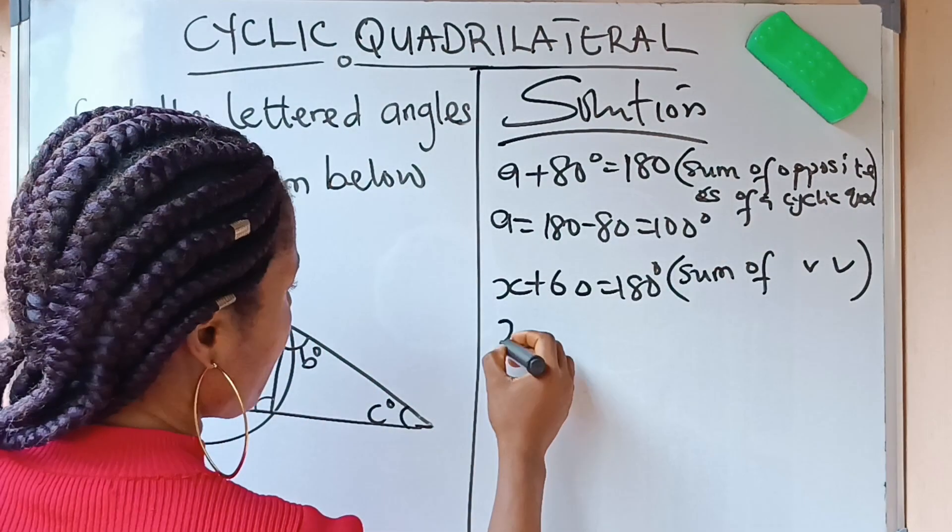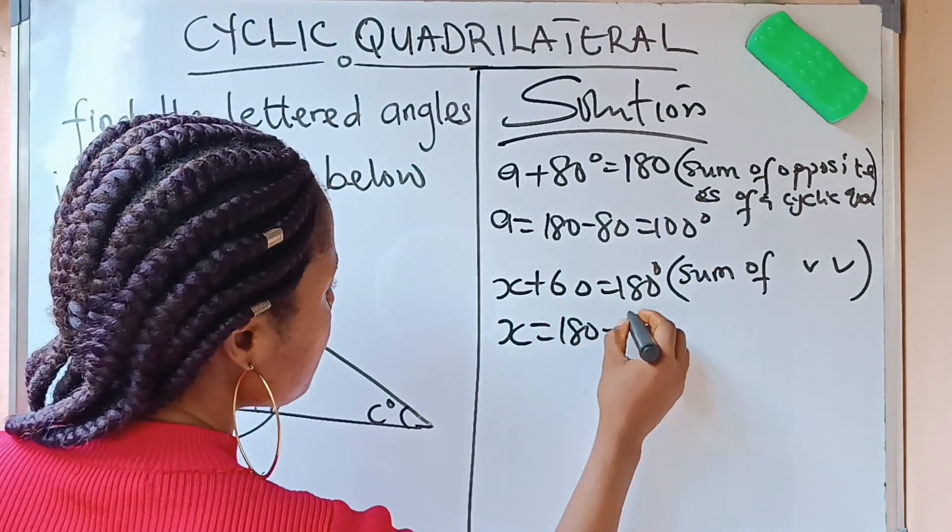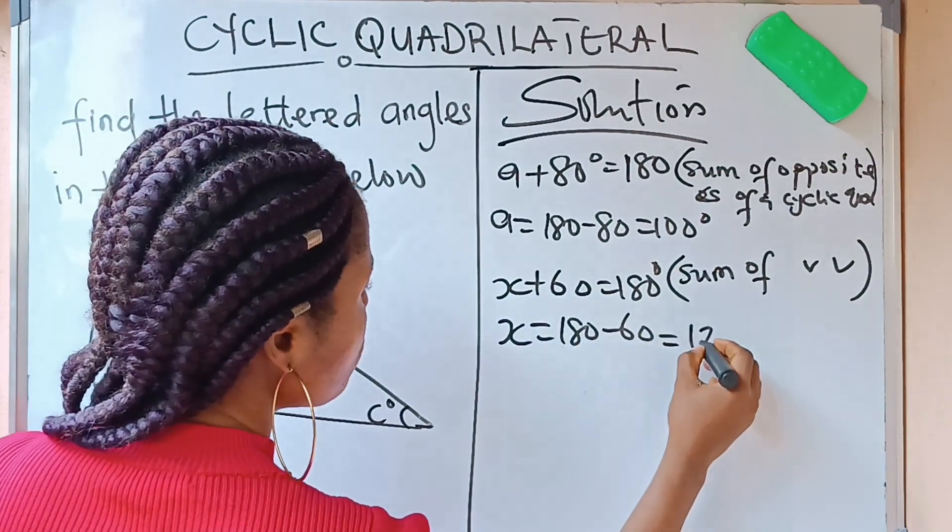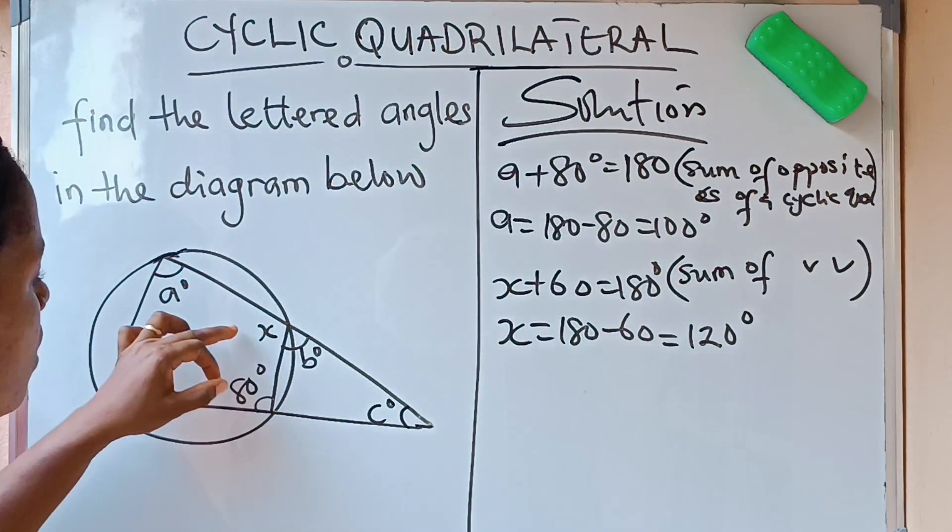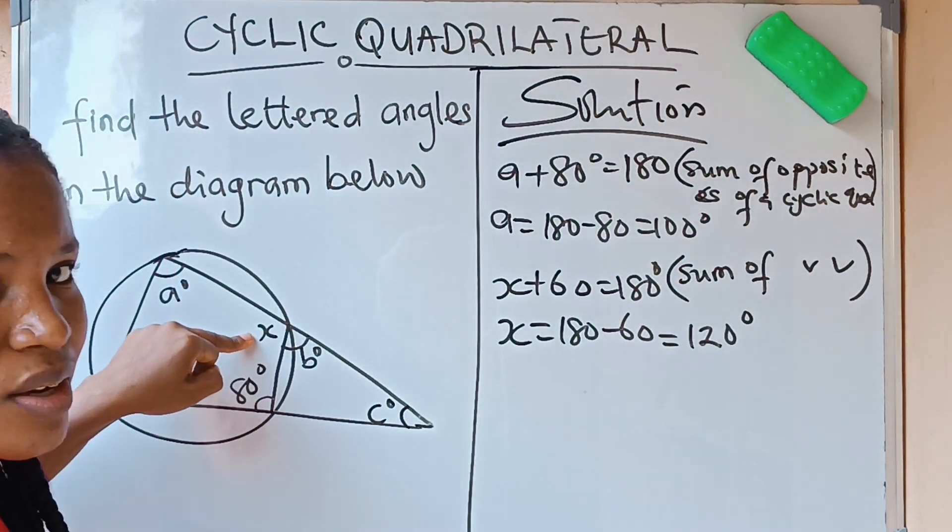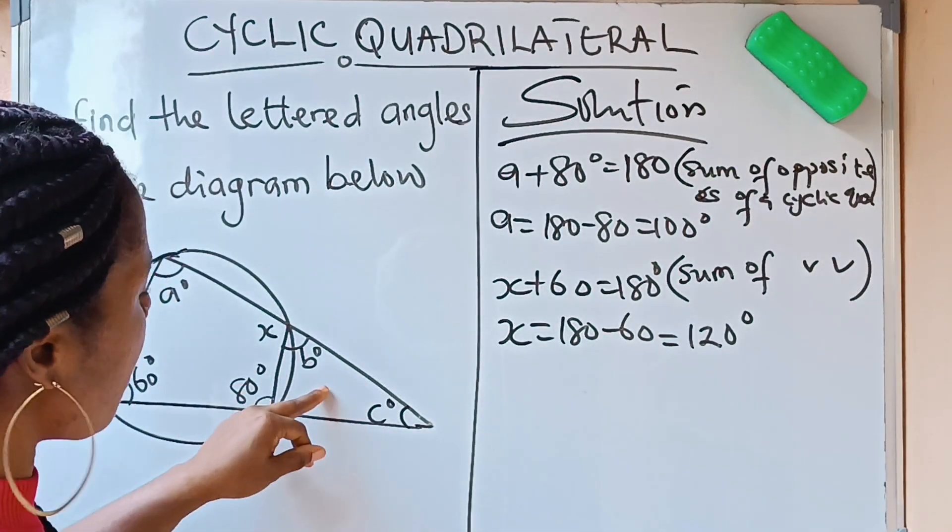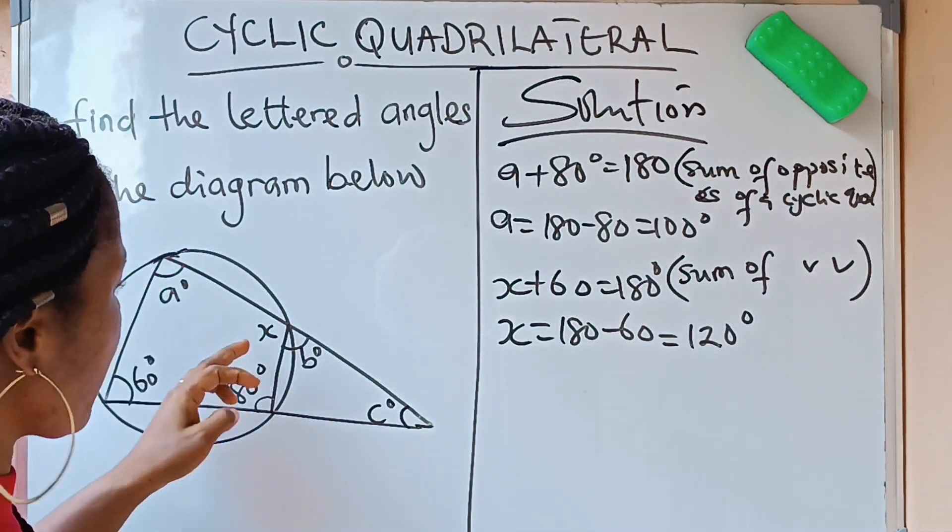Now, we have got... That means that our X is equal to 180 minus 60, which is equal to 120 degrees. We have gotten our X to be 120 degrees. We can now get our B.